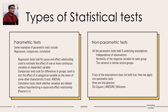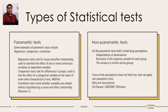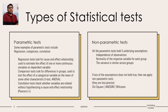Some examples of non-parametric tests include the Chi-square test, Anosim, and Wilcoxon. We conduct non-parametric tests when any of the assumptions defined for parametric tests does not hold. So, to summarize: we understand why we need statistical tests, why we conduct them, the types of statistical tests, and when to conduct a parametric versus a non-parametric test.